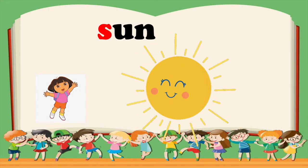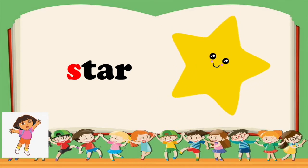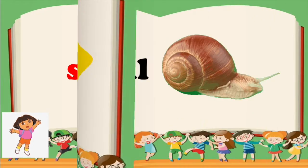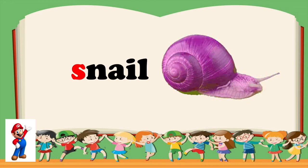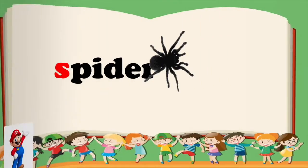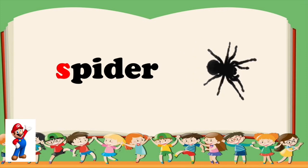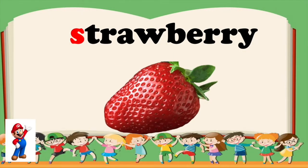Let's have another picture: soap. Soap — you said it right! The next one is sun. Sun — your turn. That's great! Next picture: star. Star — your turn. Very good! Now let's have another one: snail. Snail — your turn. Very good! And this is the picture of snake. Snake — your turn. Great job! Here is another picture that begins with S: spider. Spider — your turn. That's right! And there is some more: strawberry. Strawberry — your turn. That's right!